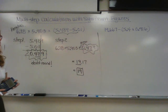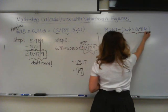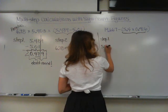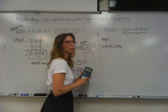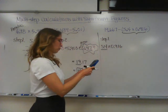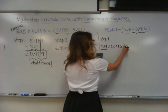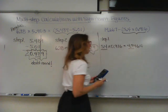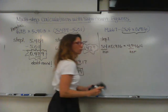Let's do the next one. What should I do first in the next problem? Parentheses — do this first. So step number one: 5.4 times 0.916. Which term has the fewer significant figures? 5.4. So we're going to underline it. 5.4 times 0.916 is 4.9464. I'm going to underline the 4.9 because with two significant figures here, you need two significant figures in your answer.